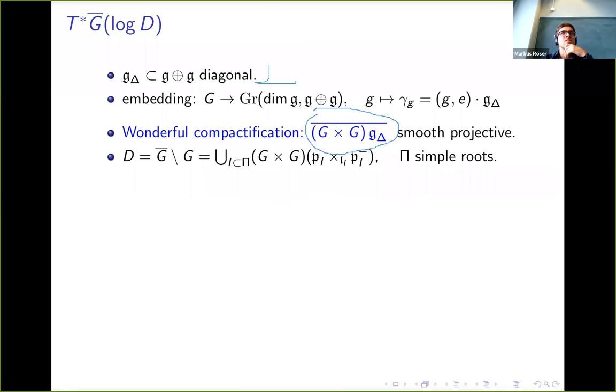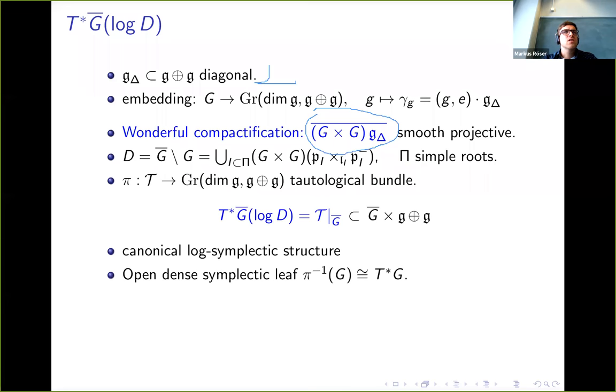Who is drawing on my slides? Can you see that too? Well, okay. So this is a finite union of G orbits, one for each subset of the simple roots. We have an open dense stratum which is G of course, and then there's a boundary divisor, normal crossings divisor, which can be decomposed into these G×G orbits.